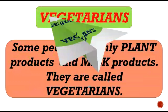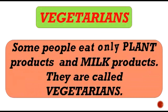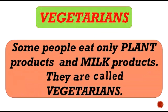First is vegetarian. People who eat only plant products and milk products are called vegetarians. Plant products means the food that we get from plants. Can you tell me some food items that we get from plants? Yes — they are vegetables, fruits, cereals, pulses, and so on.